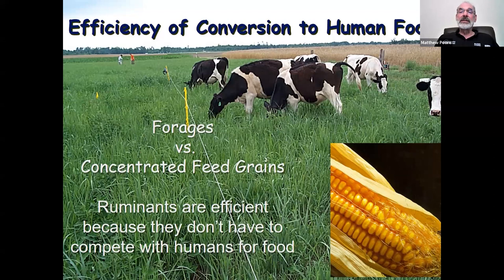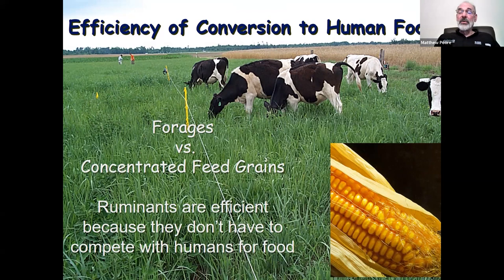Ruminants, like these grazing steers in this picture, eat forages, which are not something that can be consumed by humans. Ruminants are very efficient in the big scheme of things because they can largely live off material we could not use as food and convert it into a high quality protein product. Whether it's a food system or a companion animal system like horses, these forages are very good for the earth. Perennial forages have very deep roots, they leave a lot of carbon in the soil, and if managed properly are very beneficial to the overall climate.